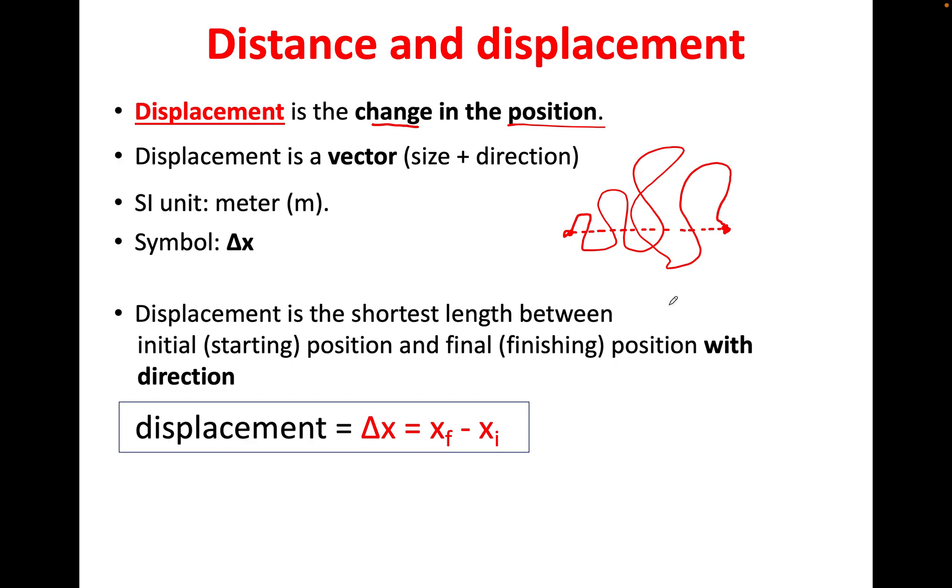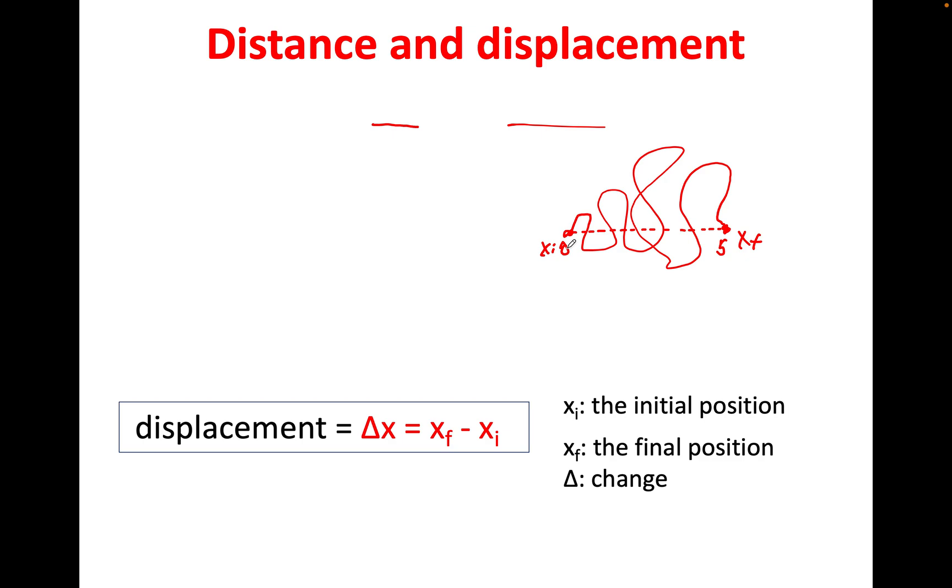XF minus XI. This will be my XF. I can say this is 5 meters. This is my XI. I can just say this is 0 starting. Final minus initial. 5 minus 0. That was 5 meters. To the right. That's a quick example there for you. This is the important stuff you need to know. This is the formula that you would use to find the displacement. Final minus initial.